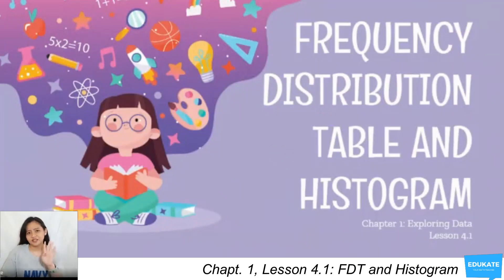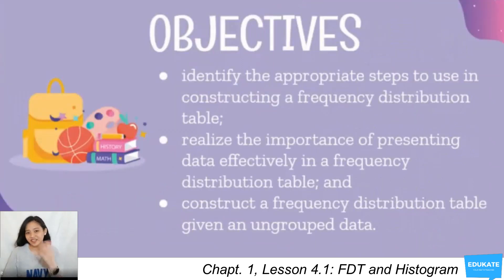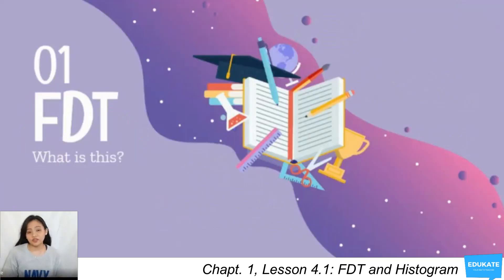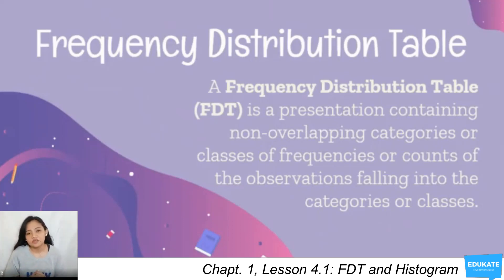This lesson is an extension of data presentation under Lesson 4, covering a special type of tabular and graphical presentation: the frequency distribution table and its corresponding histogram. A frequency distribution table, or FDT, is a presentation containing non-overlapping categories or classes of frequencies or counts of observations falling into those categories or classes.